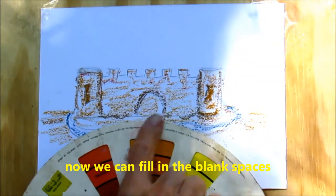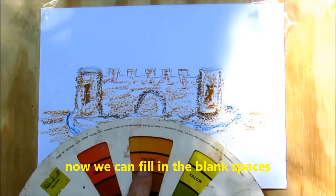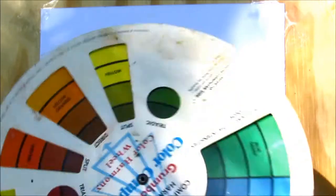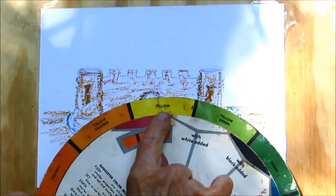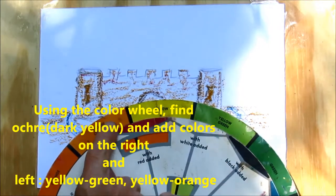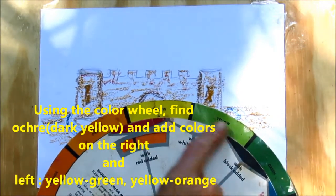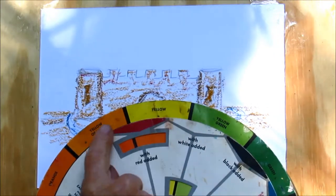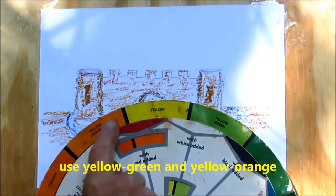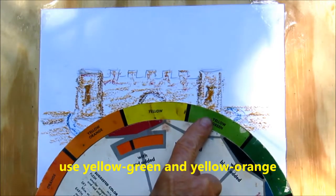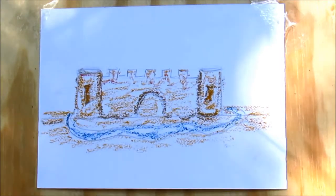Now we're going to fill in with other colors that are very close to the ochre, or the yellow, that we put. So if we look at the color wheel, we have yellow-green and yellow-orange on both either side. We look to the right of yellow, and we have yellow-green. To the left of yellow, we have yellow-orange, orange, and then to the right we have yellow-green, green. So we're going to use those colors.